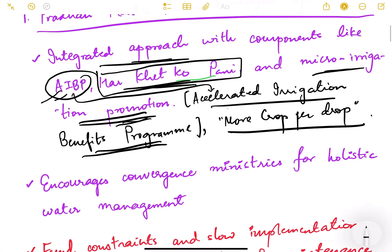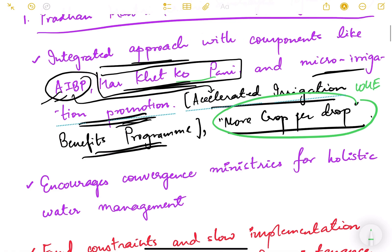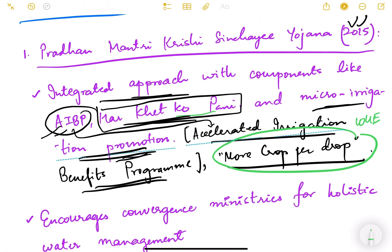And more crop per drop is the basic ethos on which this scheme works, basically to increase the water use efficiency. So having more crop yield per unit of water consumed. This is the fundamental principle behind Pradhan Mantri Krishi Sinchai Yojana.